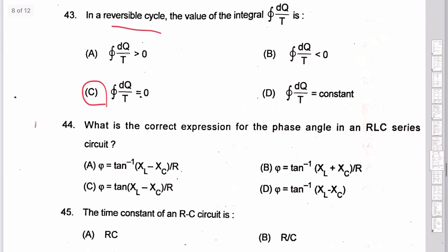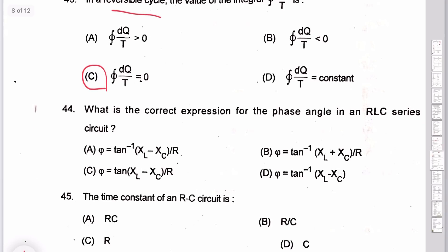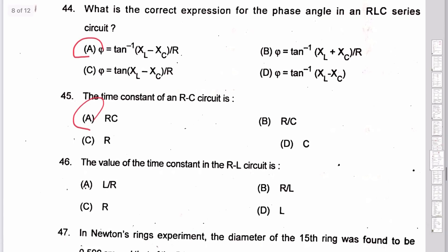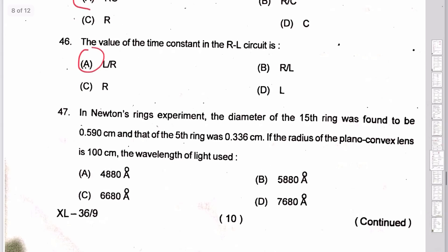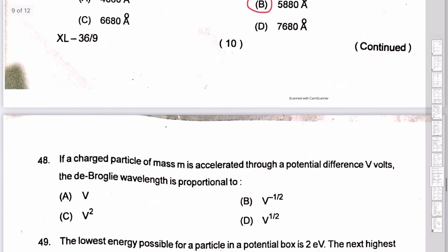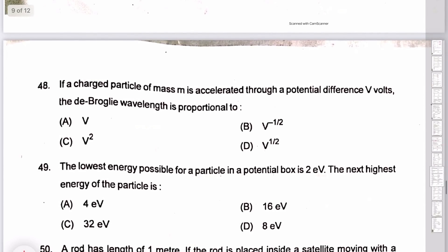What is the correct expression for the phase angle of an RLC circuit? Option A: tan⁻¹[(XL − XC)/R] is the correct answer. Time constant of RC circuit: τ = RC. Then question 46: for an RLC circuit, τ = L/R. Newton rings: answer is 47. Then option B. Question 48: de Broglie wavelength λ = h/√(2meV), so 1/B·√(2me), option B: proportional to V^(−½).